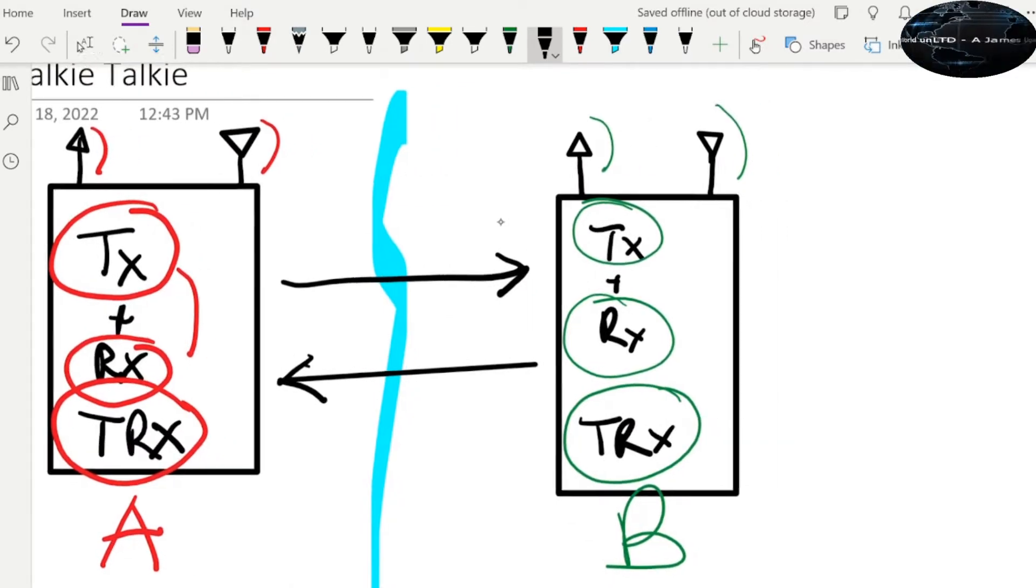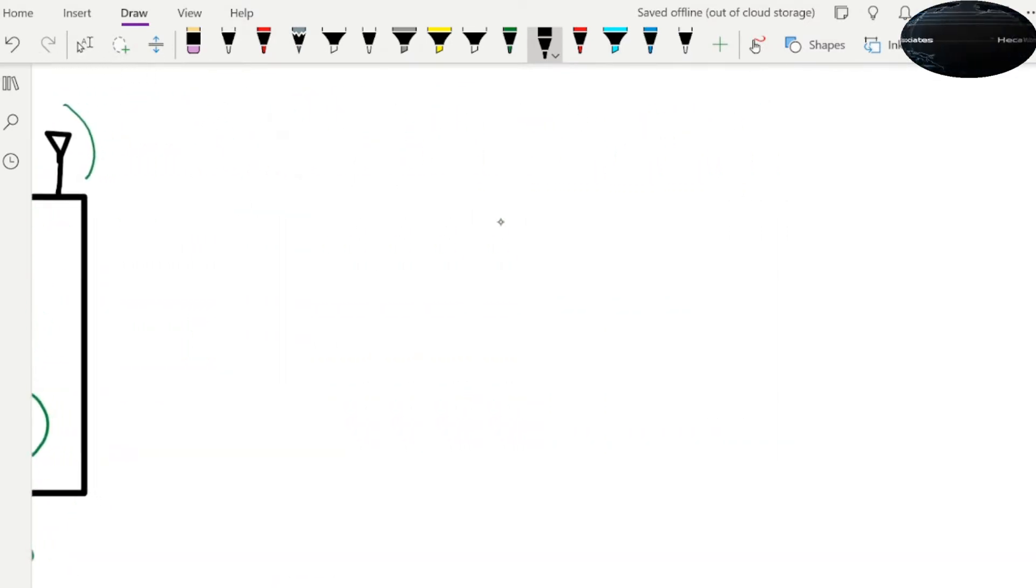So we've built circuits before, we've built transmitters before and we've built receivers also. Now what we want to do today is to combine both and give you the TRX.